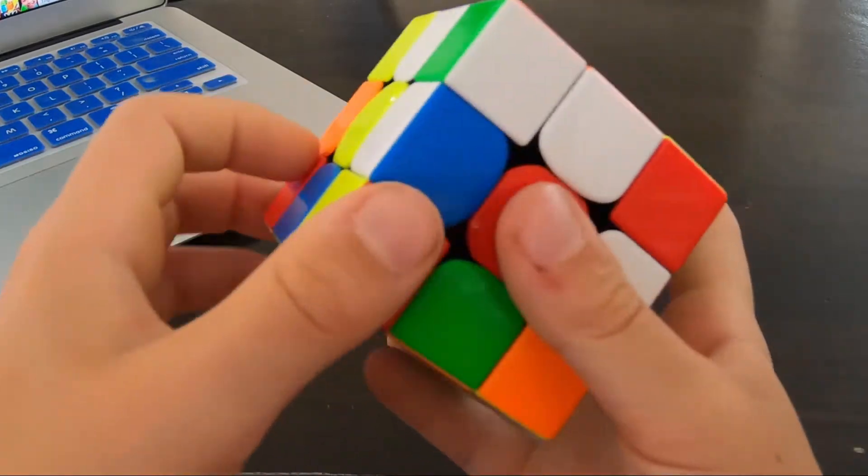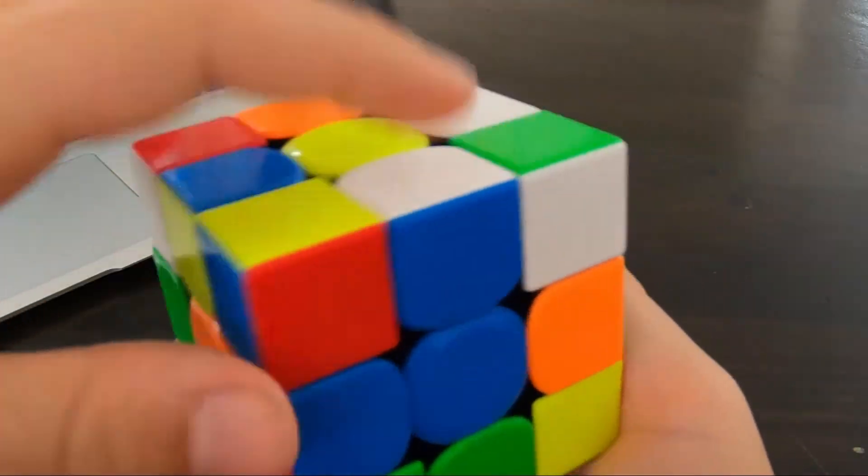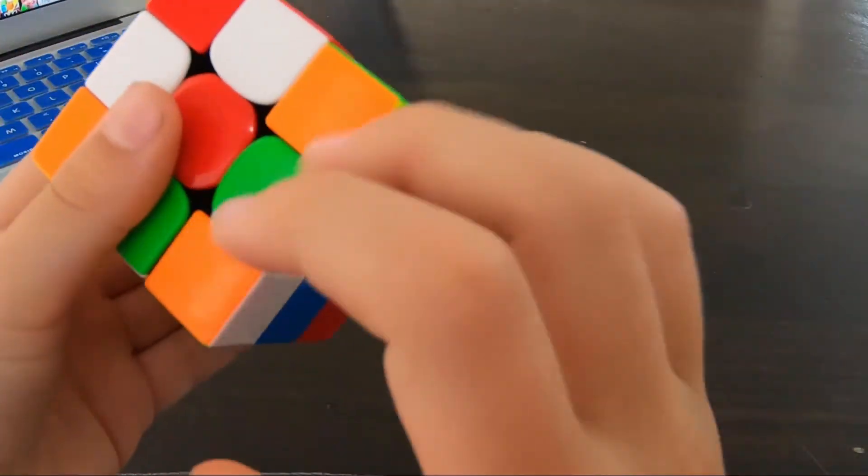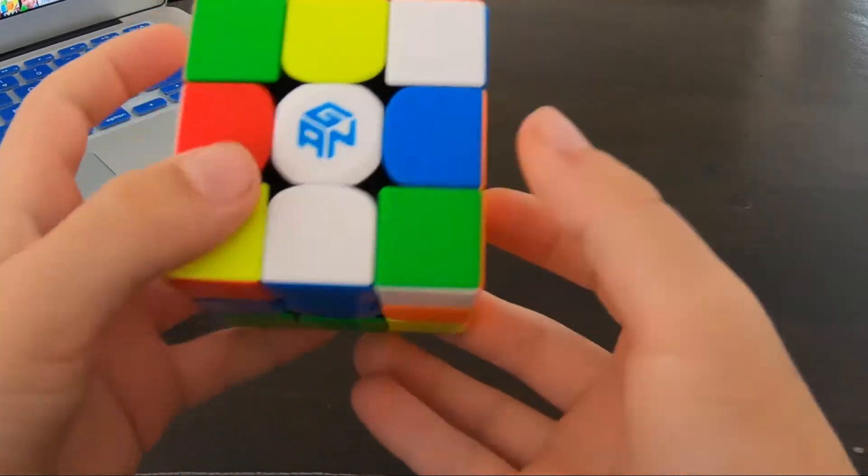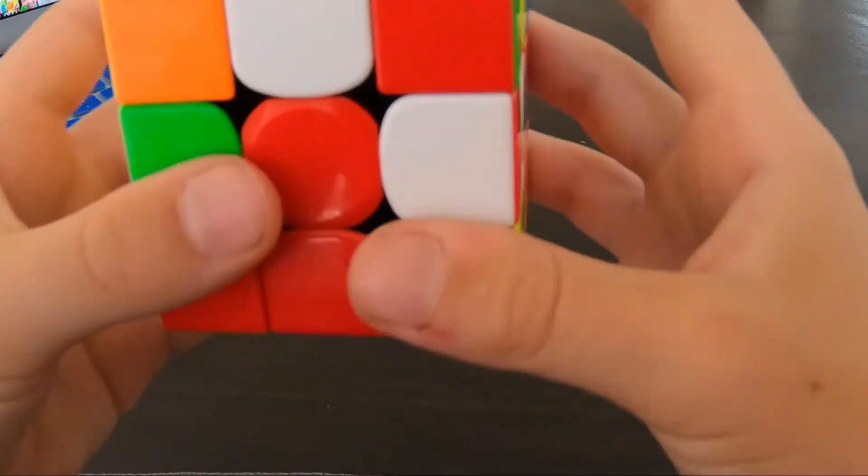So I do one move to pair up these two relative to each other like that. So that's exactly what I do is solve them. Then I insert that edge like that.